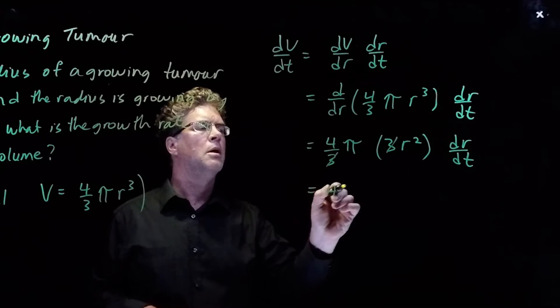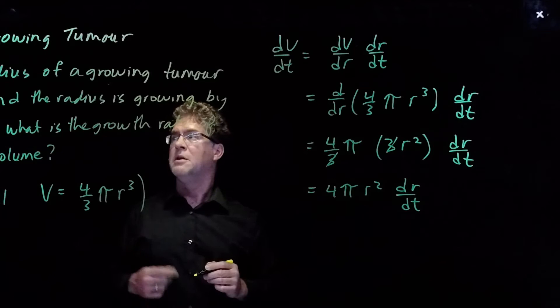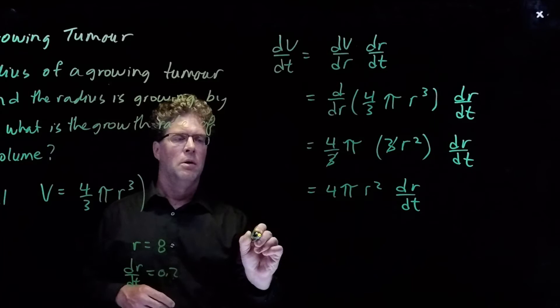The threes cancel nicely and so we get four pi times the radius squared times dr/dt. And the case we're looking at here is when the radius is equal to 8, so r is equal to 8, and the rate of change of the radius is equal to 0.2.